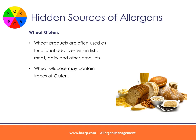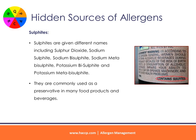Wheat gluten: wheat products are often used as functional additives within fish, meat, dairy, and other products. Wheat glucose may contain traces of gluten. Sulfites: sulfites are given many different names including sulfur dioxide, sodium sulfite, sodium bisulfite, sodium metabisulfite, potassium bisulfite, and potassium metabisulfite. Sulfites are commonly used as a preservative in many food products and beverages.